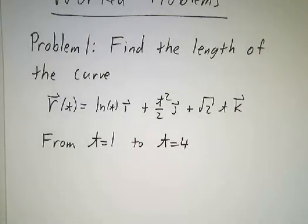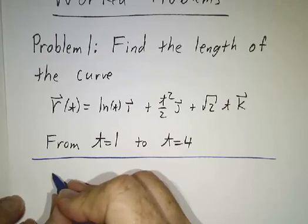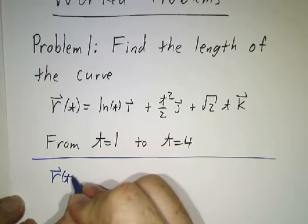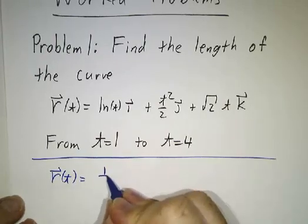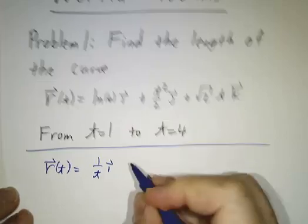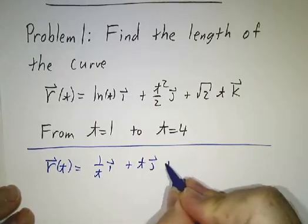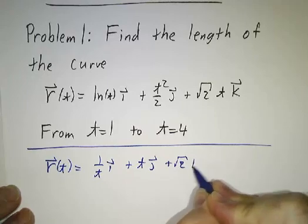So the first thing we do is we have to figure out the velocity vector. The velocity vector is 1 over t times i, plus t times j, plus root 2 times k.